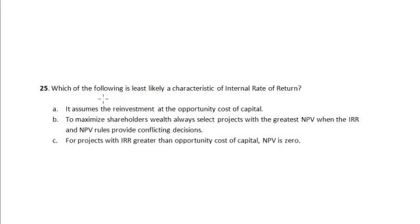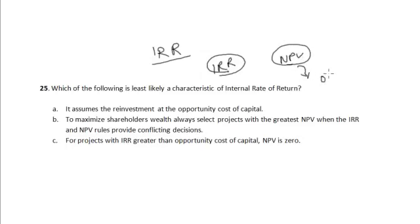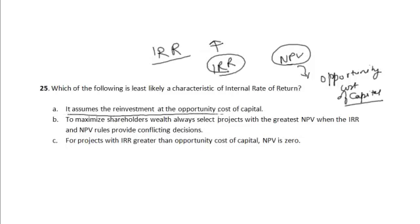Let us look at the first option. The internal rate of return (IRR) assumes that cash is reinvested at the IRR itself, whereas the NPV method assumes that cash is reinvested at the opportunity cost of capital. So the statement in Option A — that IRR assumes reinvestment at the opportunity cost of capital — is incorrect.